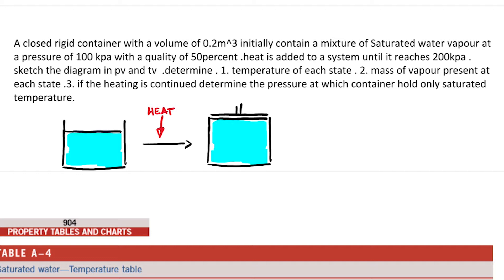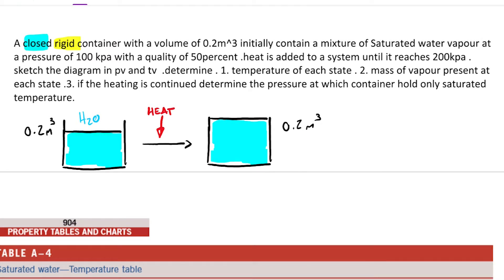So we have initially two states. We're talking about water in a 0.2 meters cubed container. It's a rigid container — very important — meaning no matter what happens, it's not a piston container; the volume stays 0.2 meters cubed. It's also a closed container, meaning no mass is entering or leaving. In our first state, we have a saturated mixture with a quality of 50%, so we can be sure that state one contains both saturated liquid and saturated vapor.